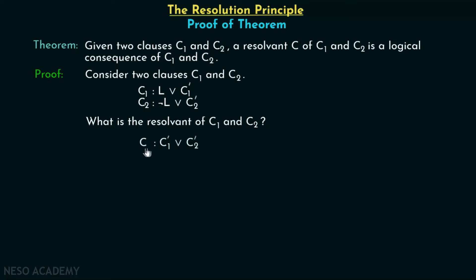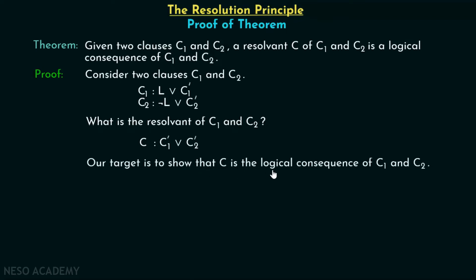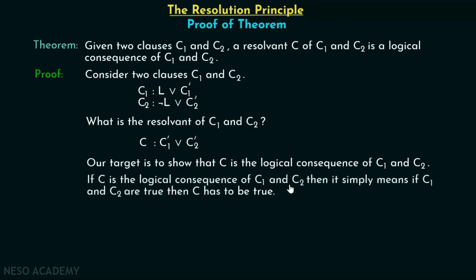So it is clear that C, which is the resolvent, is C̄1 or C̄2. Our target is to show that C is the logical consequence of C1 and C2. If C is the logical consequence of C1 and C2, it simply means that if C1 and C2 are true, then C has to be true.